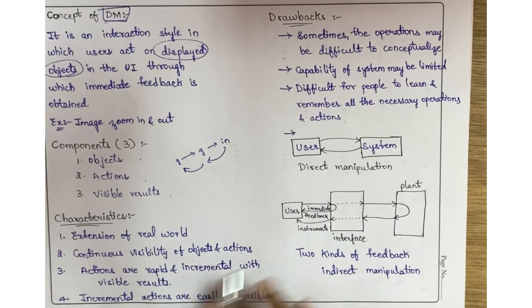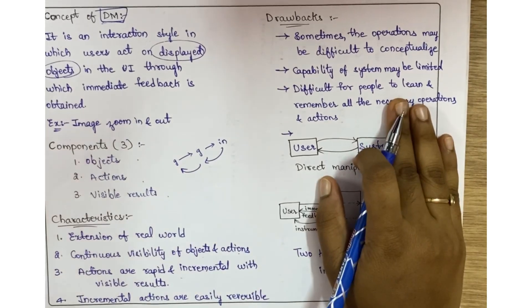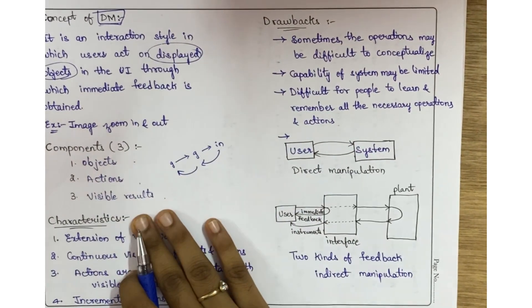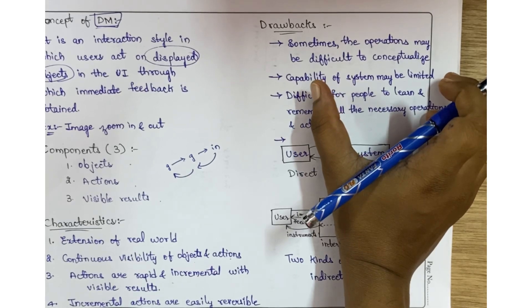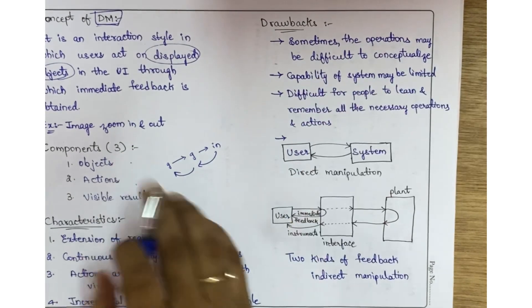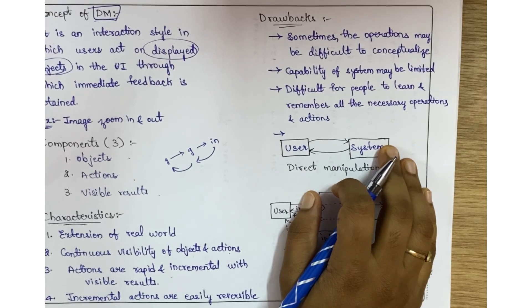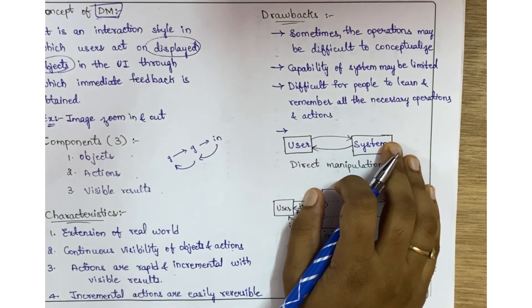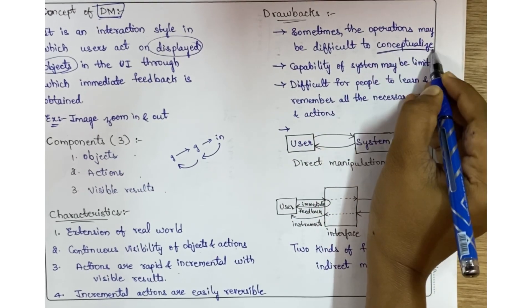Coming to the drawbacks of direct manipulation: sometimes the operation may be difficult to conceptualize. As the results are very spontaneous, sometimes we may not immediately catch how the operation is going on, so the concept of operations may not be conceptualized.